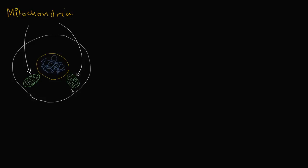You might have already learned that these are viewed as the ATP factories for cells. ATP is really the currency for energy in the cell. When it's in its ATP form — adenosine triphosphate — if you pop one of the phosphate groups off, it releases energy. That's what your body uses for everything from movement to thinking. You'll find more mitochondria in things like muscle cells, things that have to use a lot of energy.